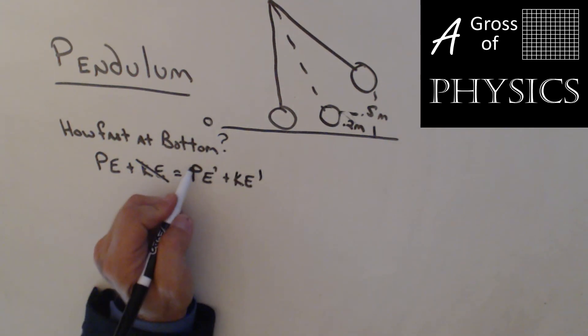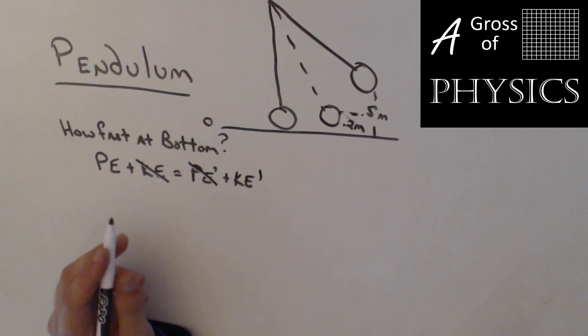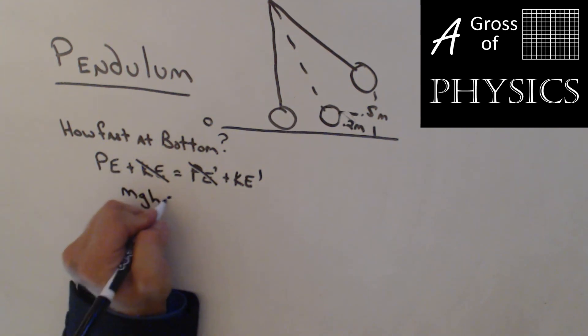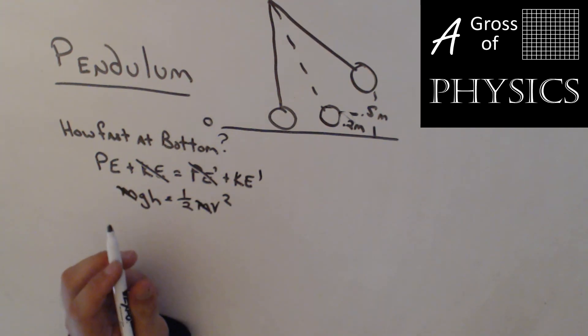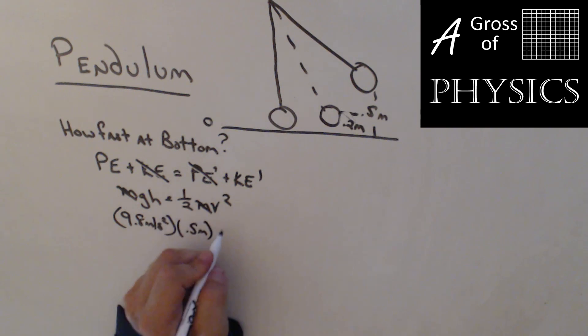And then if we're looking at the very bottom, it's going to be at the ground, so the potential energy is zero. So mgh equals one-half mv squared. Now mass is in every term, so it cancels. 9.8 meters per second squared, height is 0.5 meters equals one-half mv squared. And we simply multiply 9.8 times 0.5, divide it by 0.5 again, and take the square root. And we end up with 3.13 meters per second as our speed at the bottom.